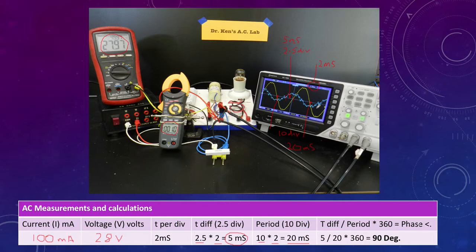So we now want to know what proportion our 5 is of our 20. And then we want to multiply that by 360 to get degrees.